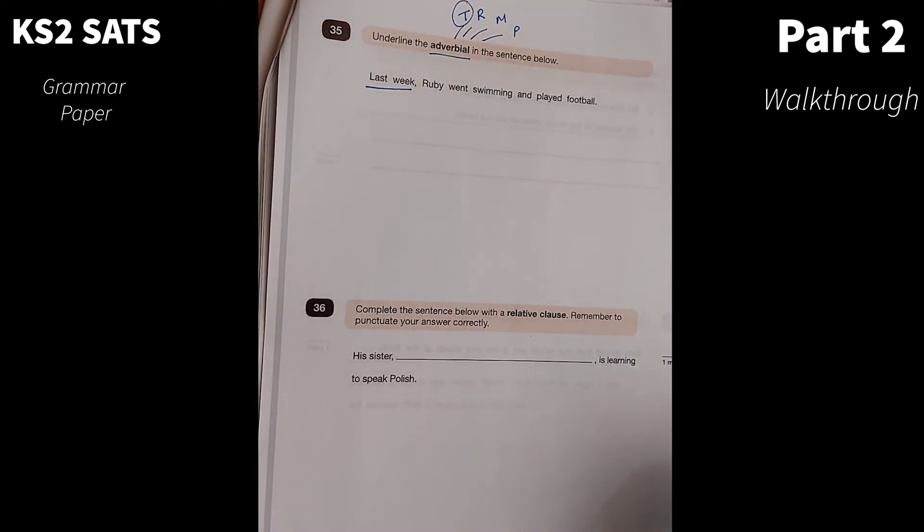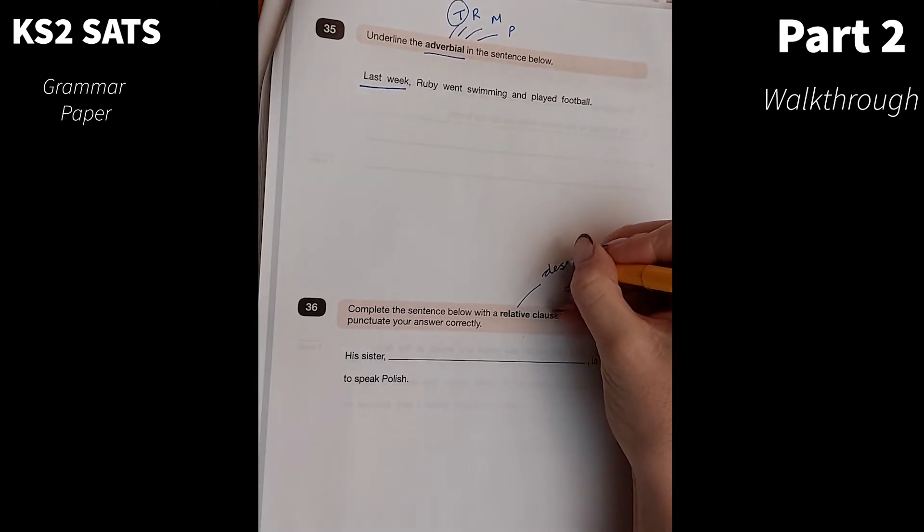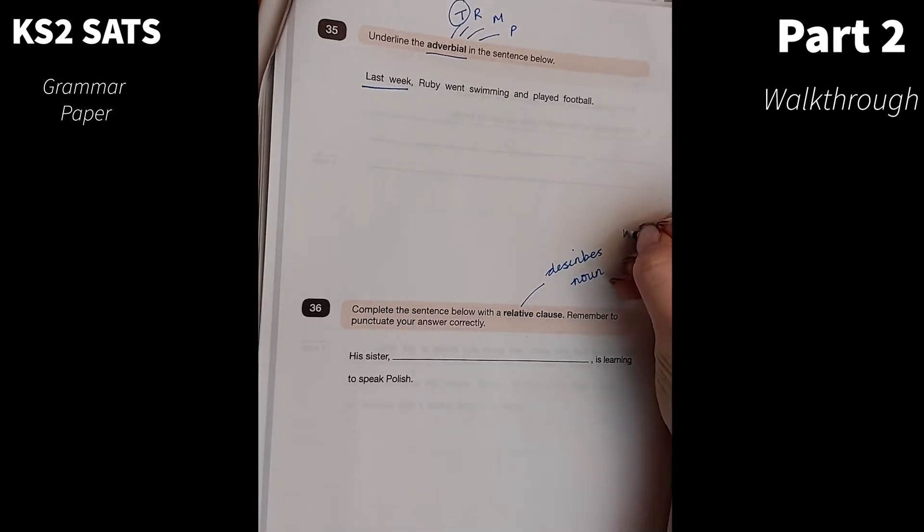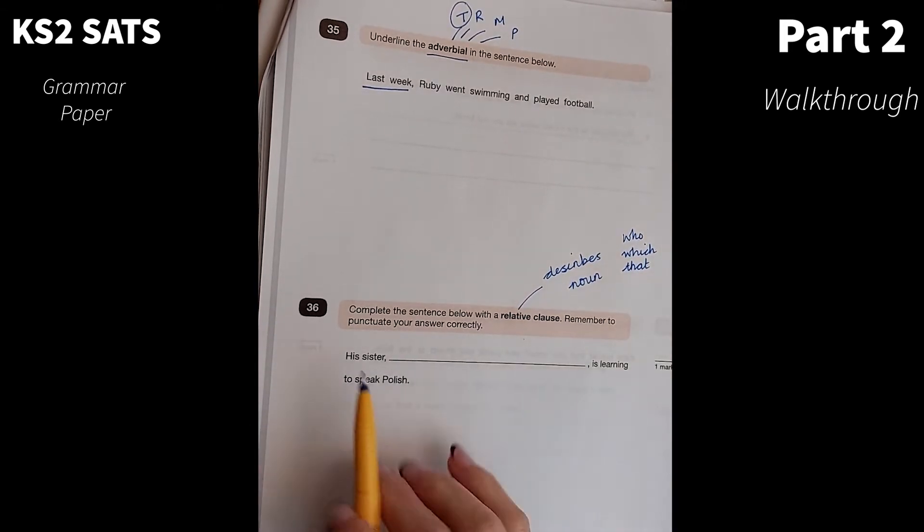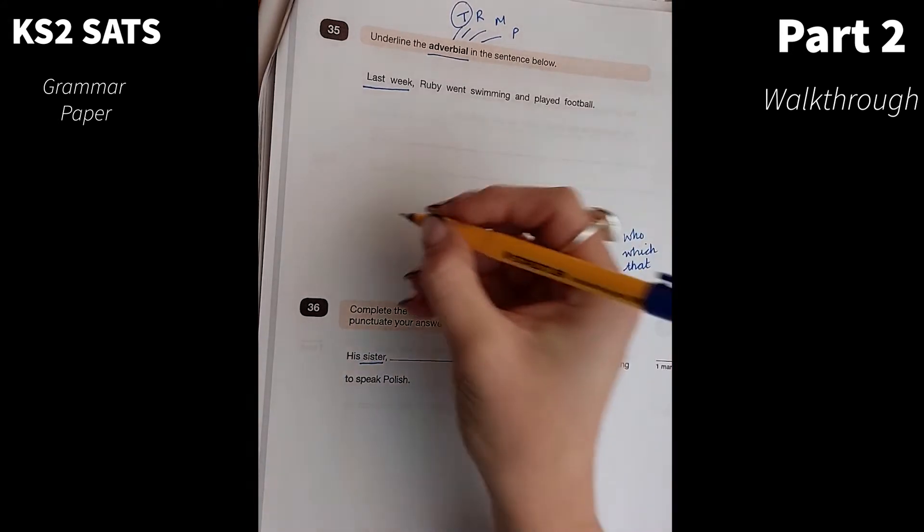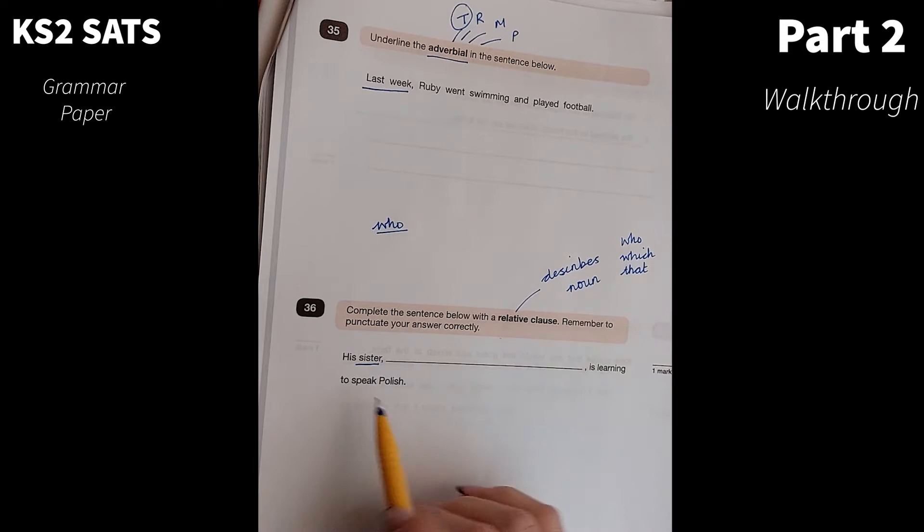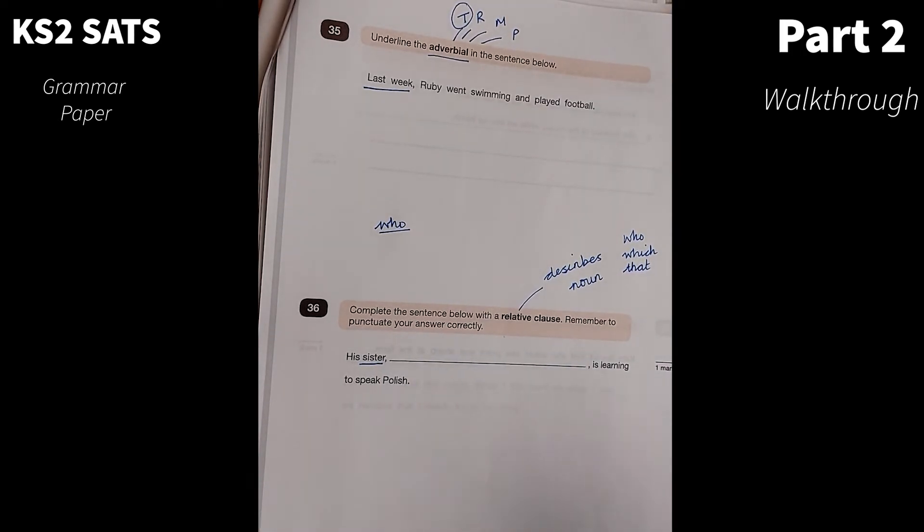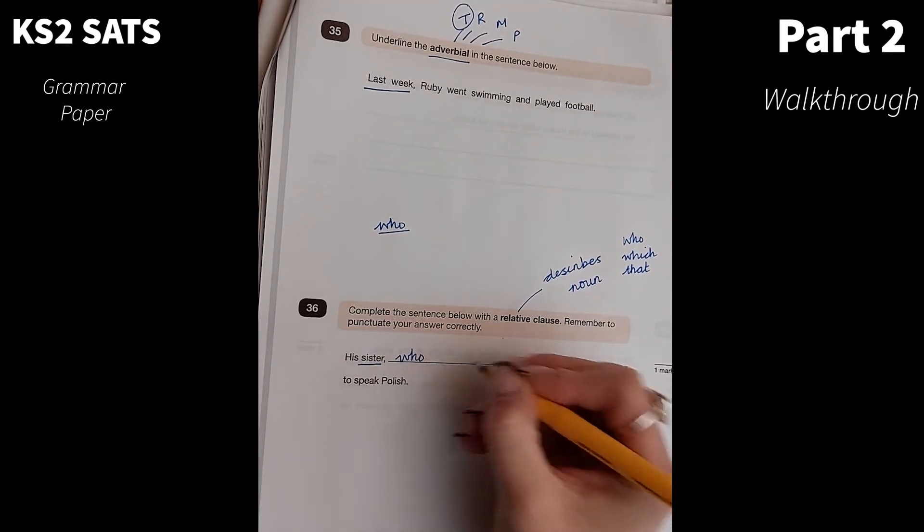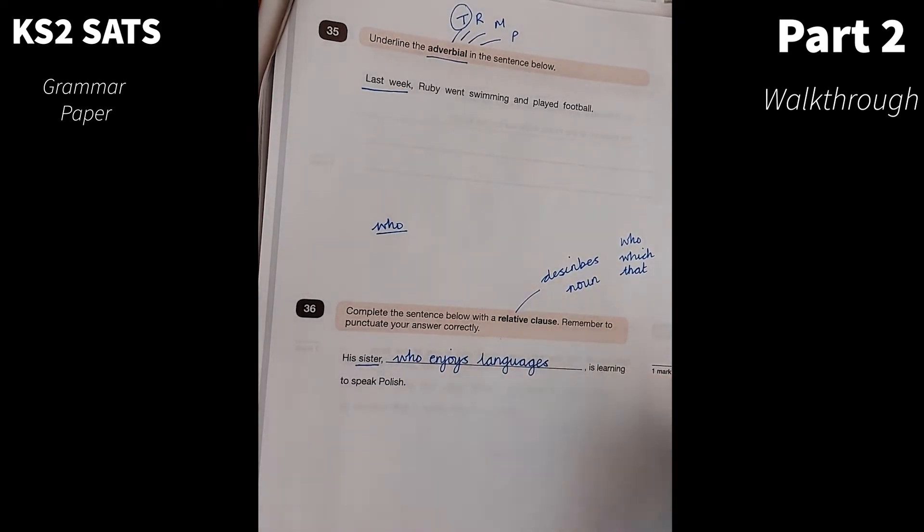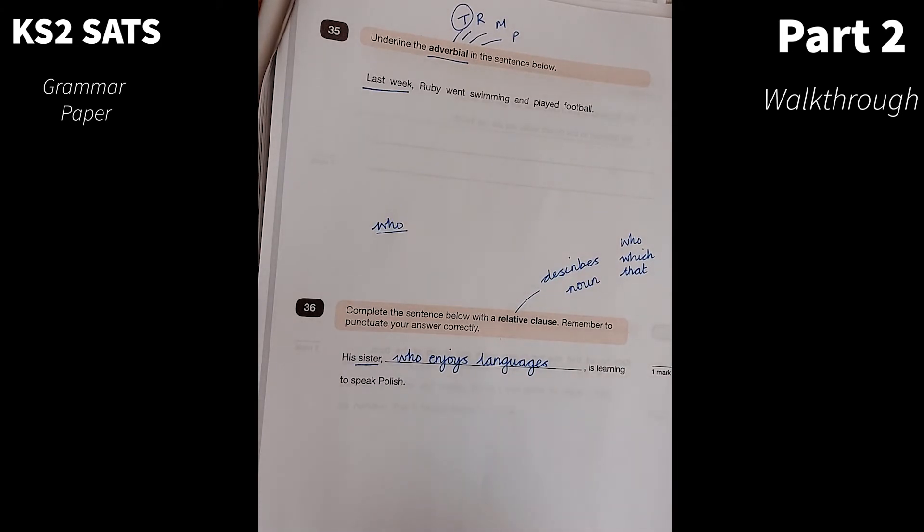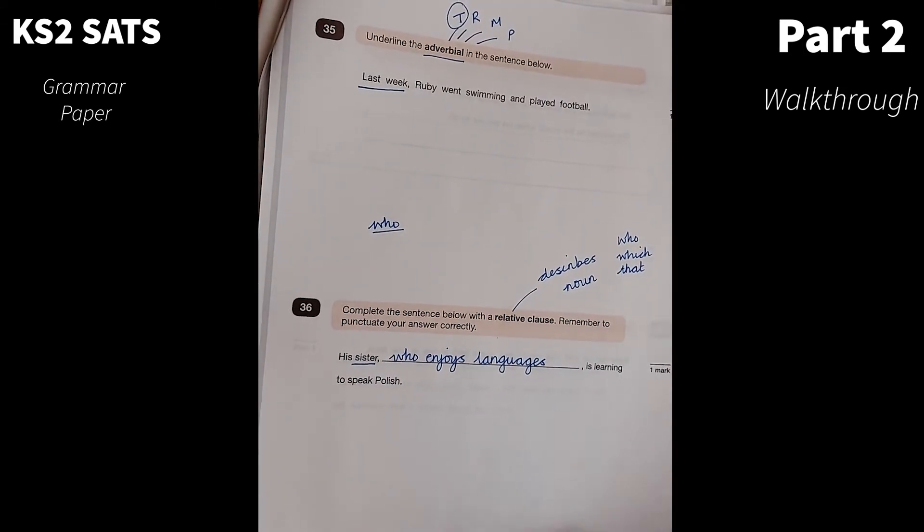Number 36. Complete the sentence below with a relative clause. I know that my relative clause describes a noun. And I can use relative pronouns such as who, which, whom, that. Let's have a look at the sentence that I need to add to. His sister. Because I'm speaking about a person, I think I'm going to select the relative pronoun who. But I need to put it in a bit of context. His sister is learning to speak Polish. So I might want to say, his sister, who enjoys languages, is learning to speak Polish. But you could have a series of different sentences. You could put a few different relative clauses in there. Who is six years old? Who speaks French fluently? As long as it makes sense and as long as it has one of those relative pronouns, it will count as a relative clause.